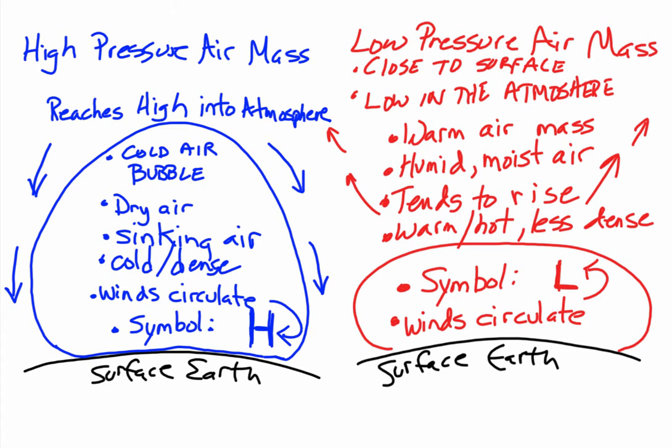Basically, we're looking at the characteristics of the two different types of air masses. A high-pressure air mass would be a cold air mass. High-pressure air masses reach high into the atmosphere. They're made up of cold air, kind of like a big bubble. They're generally dry air, not humid air.